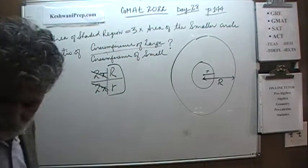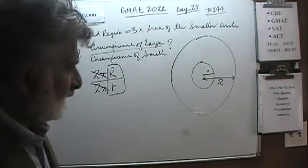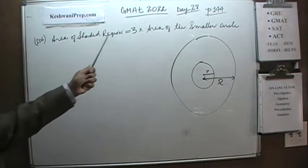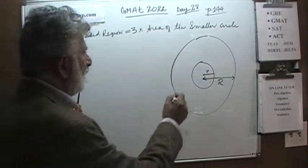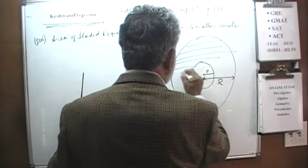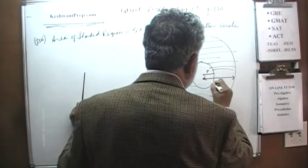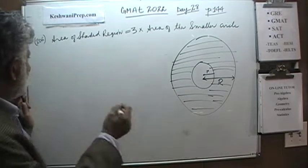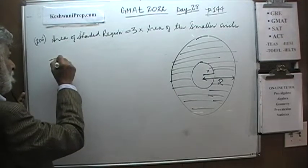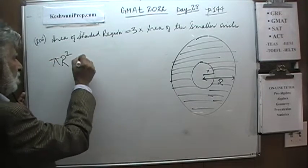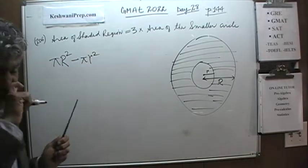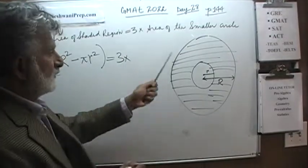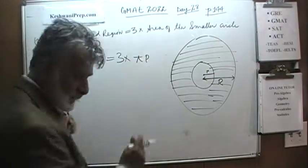So that's what we're looking for: the ratio of the radii. We know that the area of the shared region is equal to 3 times the area of the small circle. The shared region is right here — this is the only shared region. The area of the shared region is simply the area of the large circle minus the area of the small circle: πR² − πr². And we are told this equals 3 times the area of the small circle, which is 3πr².